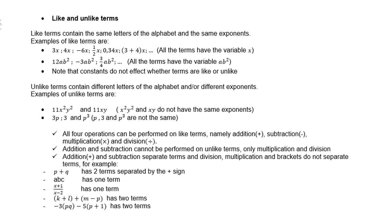Unlike terms contain different letters of the alphabet and/or different exponents. Examples of unlike terms are 11x², y², and 11xy, because x², y², and xy do not have the same exponents. 3p, 3, and p³ - well, p, 3, and p³ are not the same.